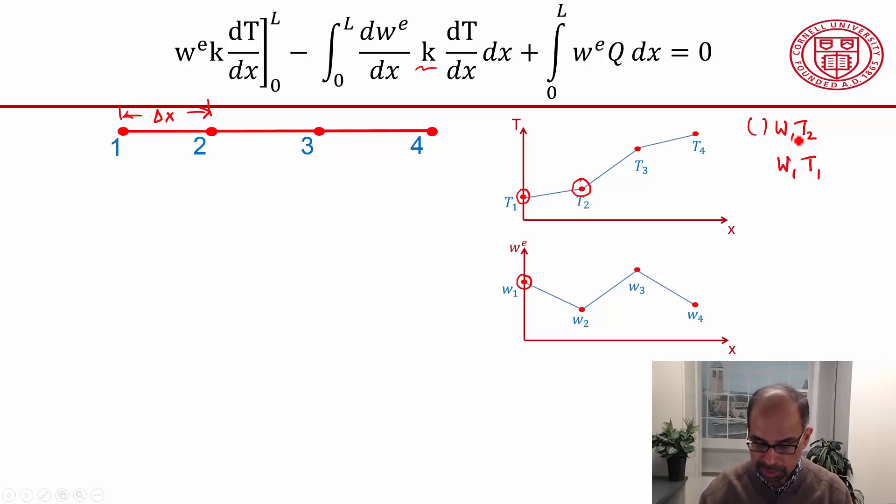When I consider w2, you'll get a term when you do the integration over the first element. You will get a term where w2 multiplies t1, and you will also get a term where w2 multiplies t2.